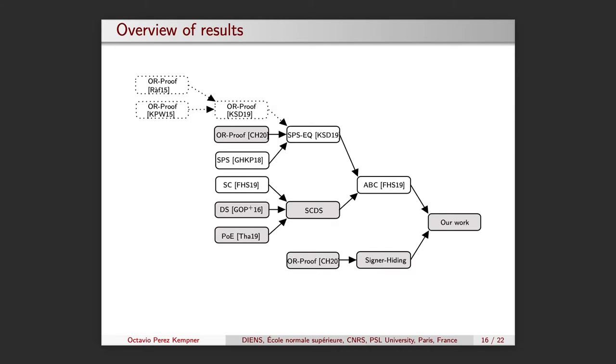As can be seen on this slide, the modifications introduced in this work are marked in grey. If we look at it top down, we first replaced the OR proof on the original signature scheme. Then, we built a set-commitment scheme supporting disjoint sets based on the original set-commitment scheme plus the use of batch non-membership proofs and the proof of exponentiation. Having a new instantiation for the ABC framework, we added the signer-hiding part to it.